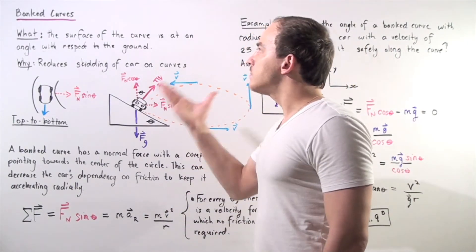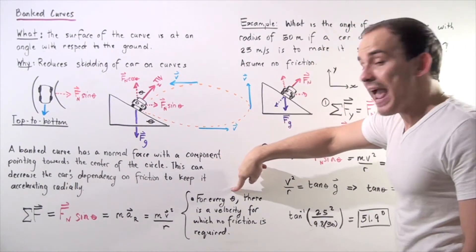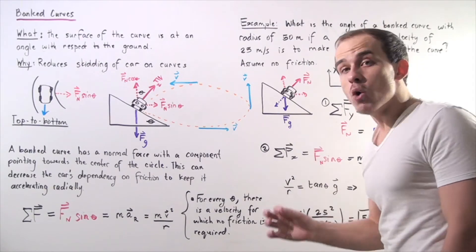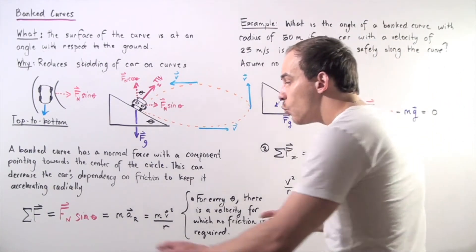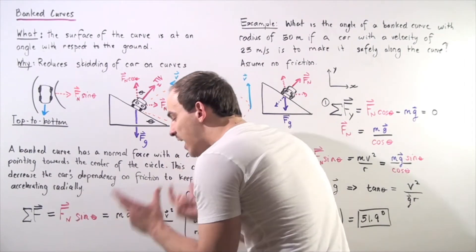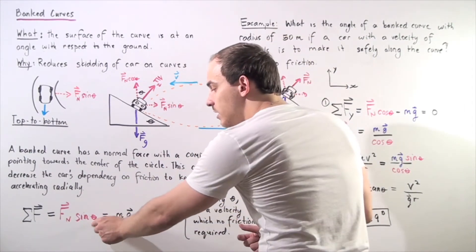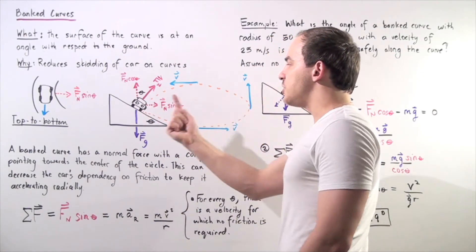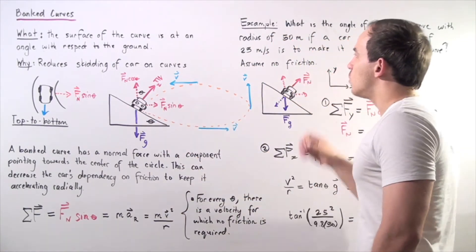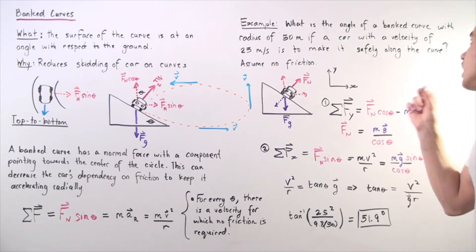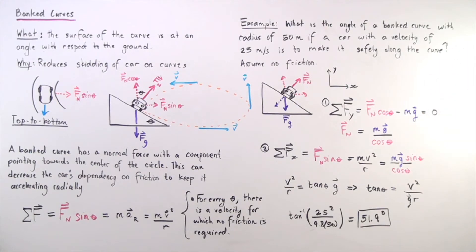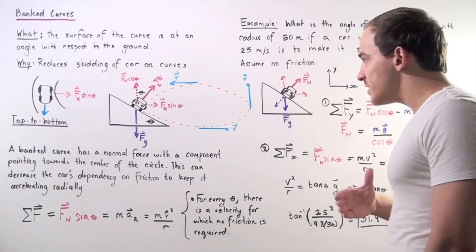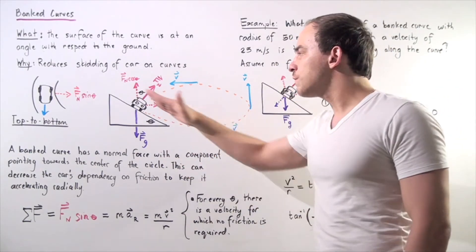For every angle, there is a velocity for which no friction is required. This equation tells us that for a certain angle theta, no friction is required for our car to continue moving in the circular pathway. Example problem: What is the angle of a bank curve with a radius of 50 meters if a car with a velocity of 25 meters per second is to make it safely along the curve? We're assuming no friction — essentially a bank curve made of ice.